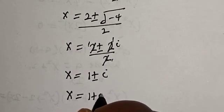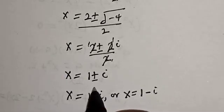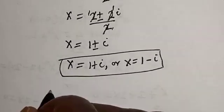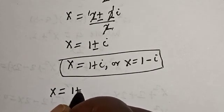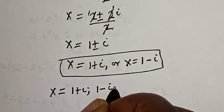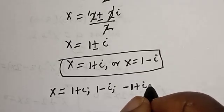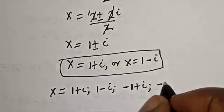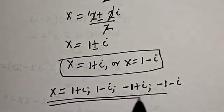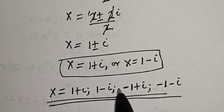Simplifying, s is equal to 1 plus or minus i. Therefore s equals 1 plus i or s equals 1 minus i. Therefore the roots of the equation are s equal to 1 plus i, 1 minus i, minus 1 plus i, and minus 1 minus i. That is the final answer. Before you leave, like, share, comment and subscribe. Thank you, bye bye.